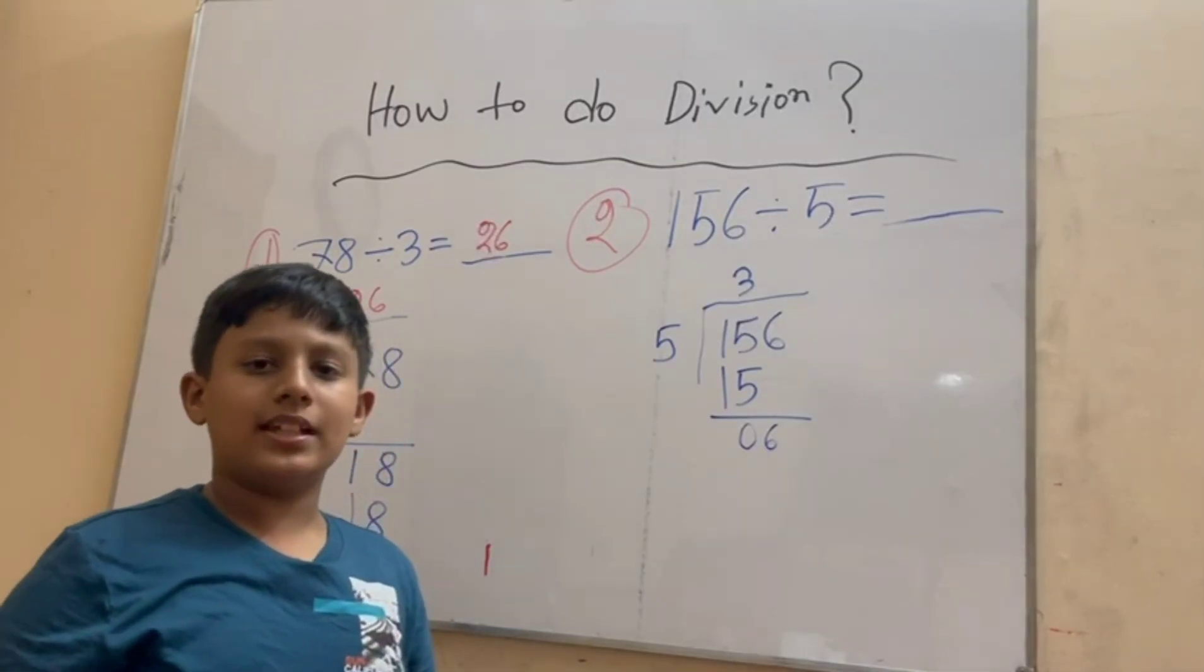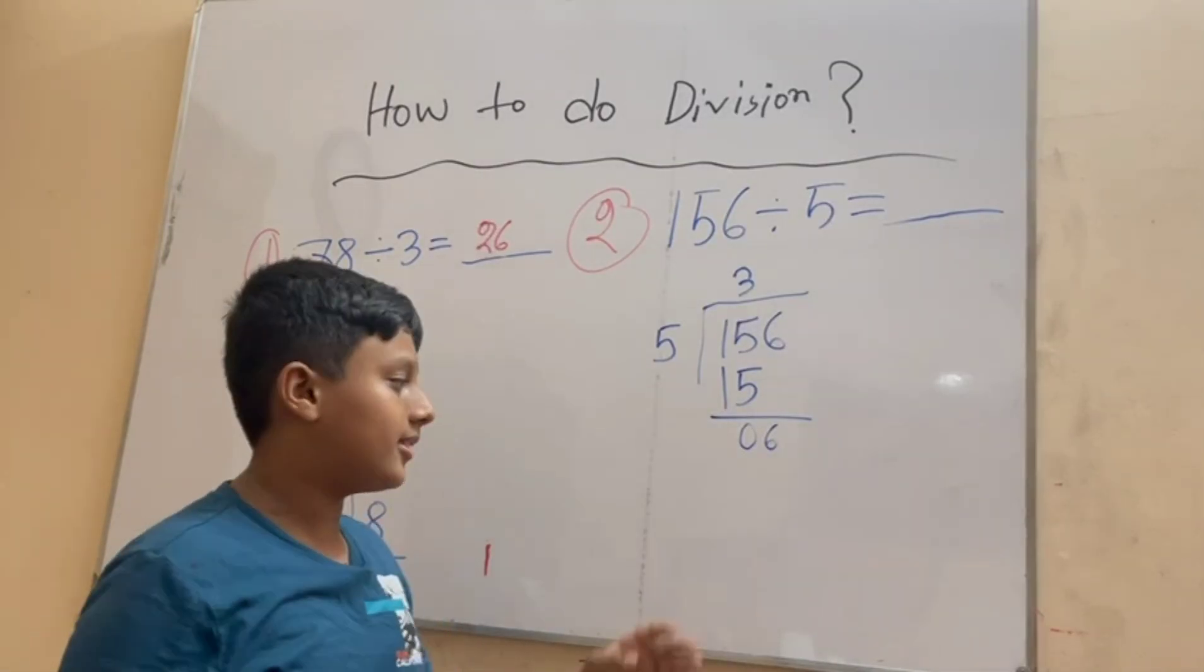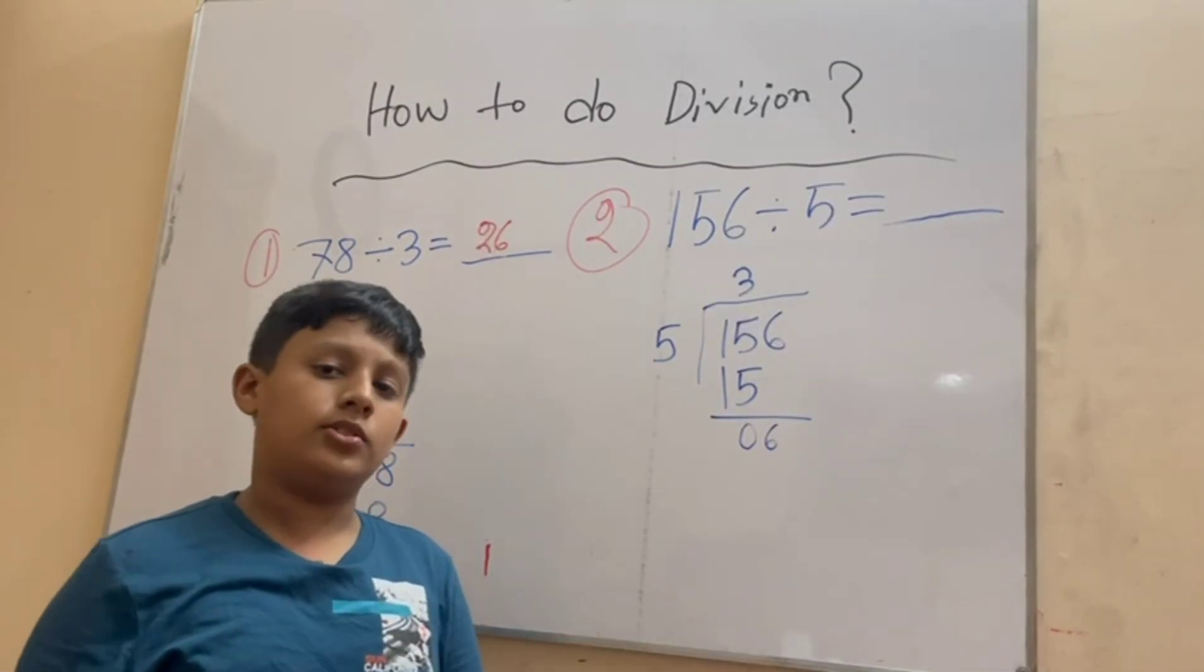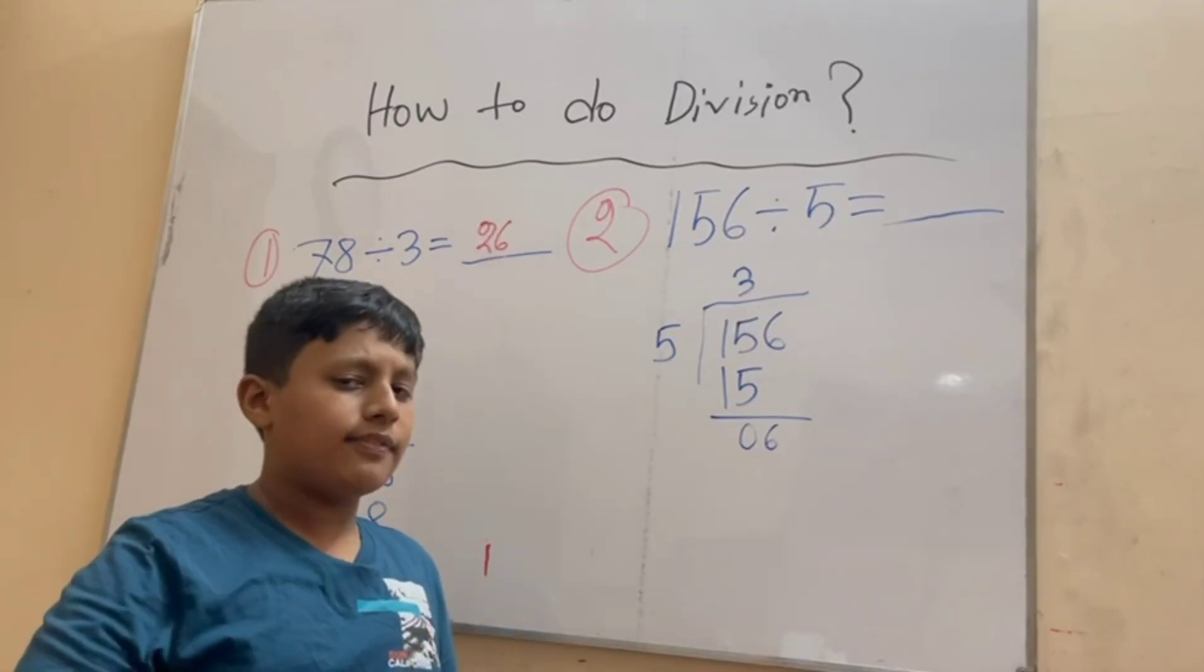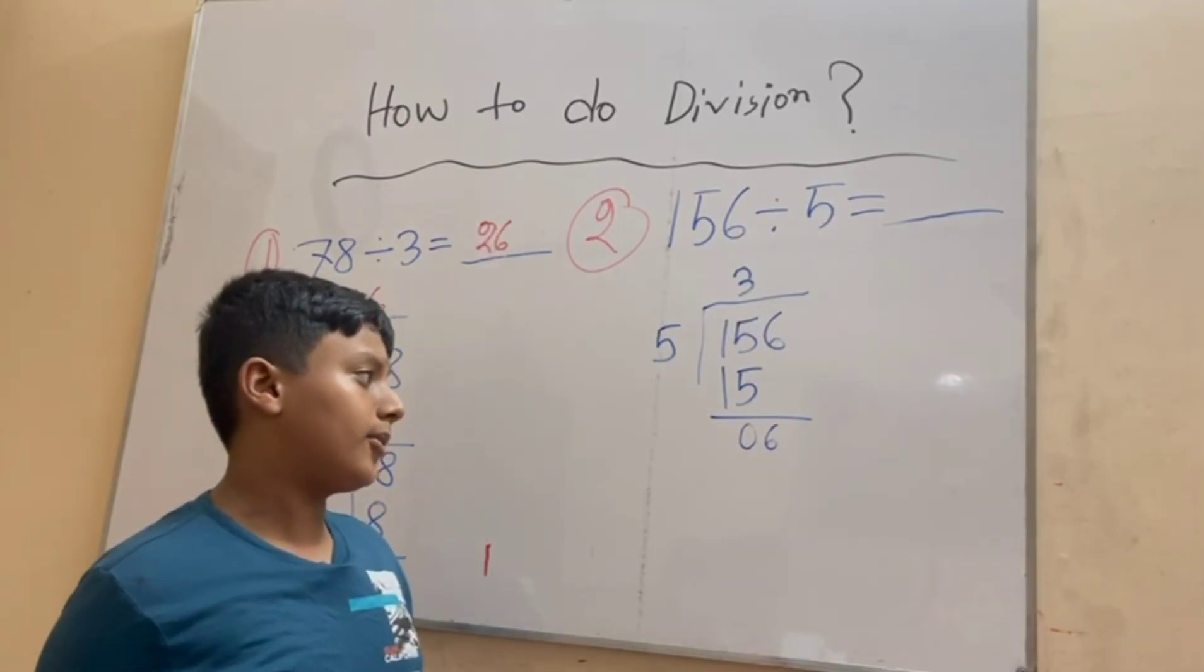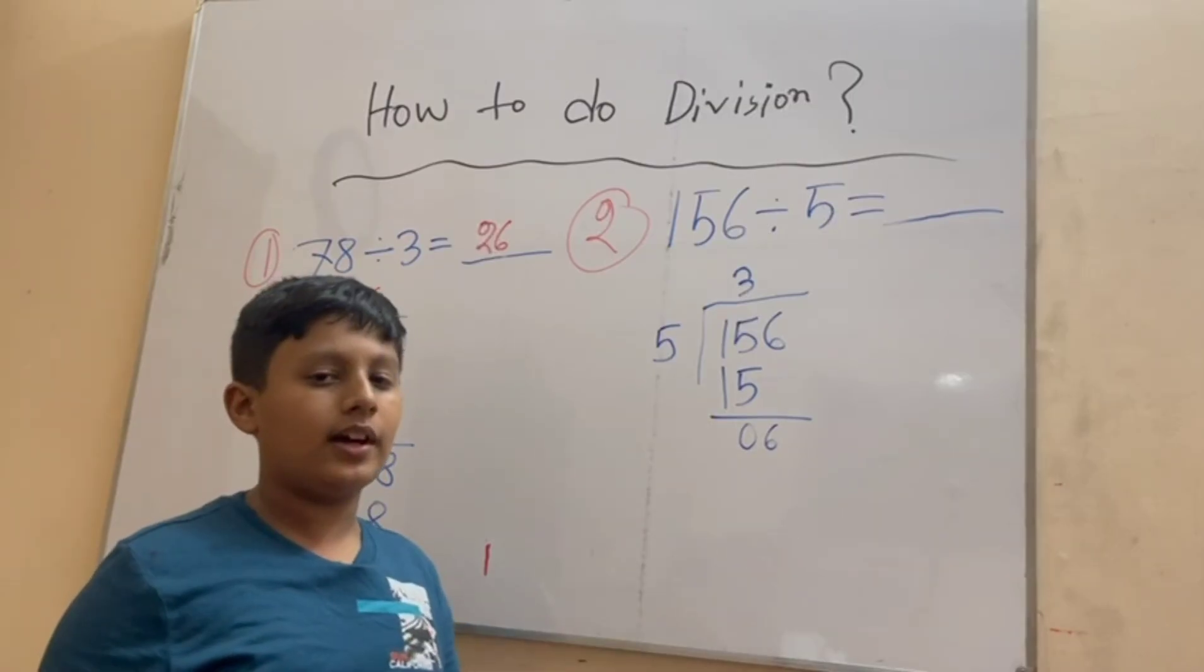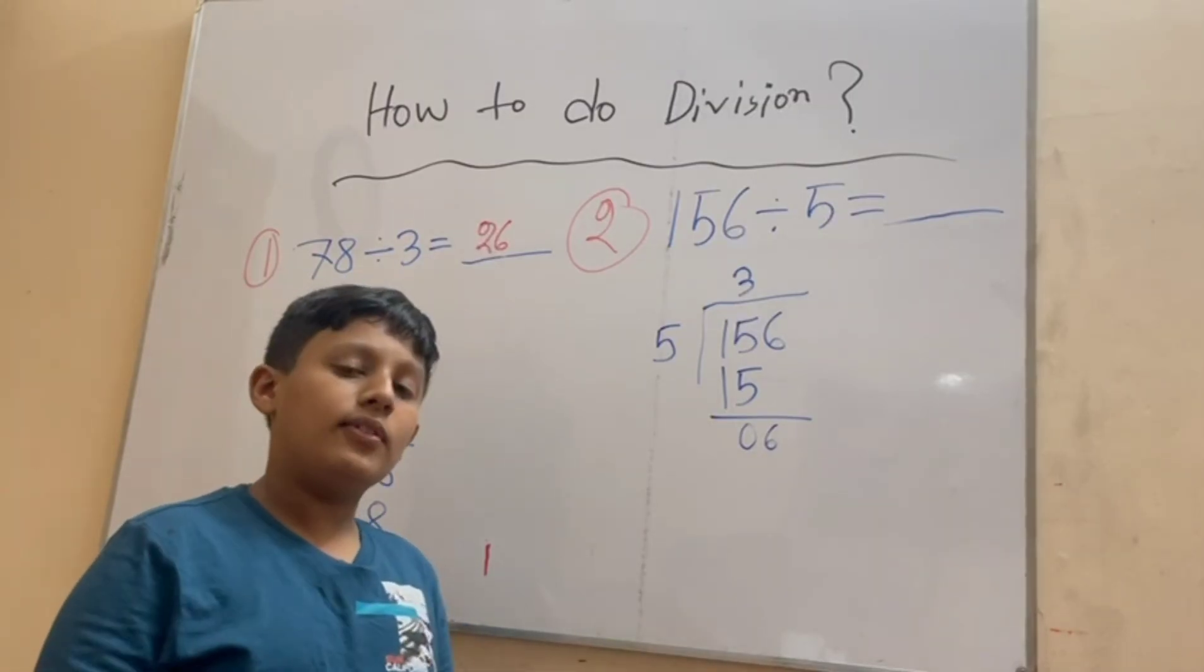How many times will it take for five to become six or almost close to it? Well, five ones are five, five twos are ten. If we take five twos are ten, ten becomes bigger than six, so we have to choose the rounding number: five ones are five.